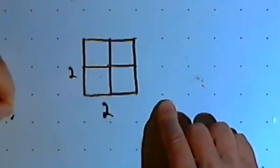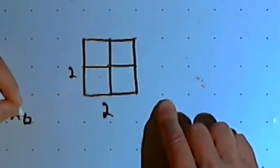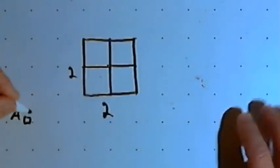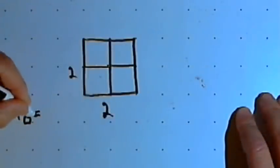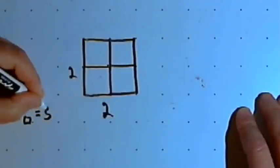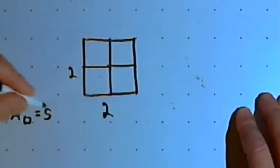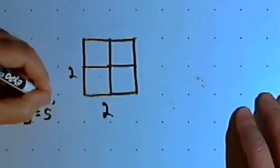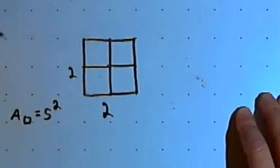So the area of a square is simply the length of one of the sides multiplied by itself, or squared.